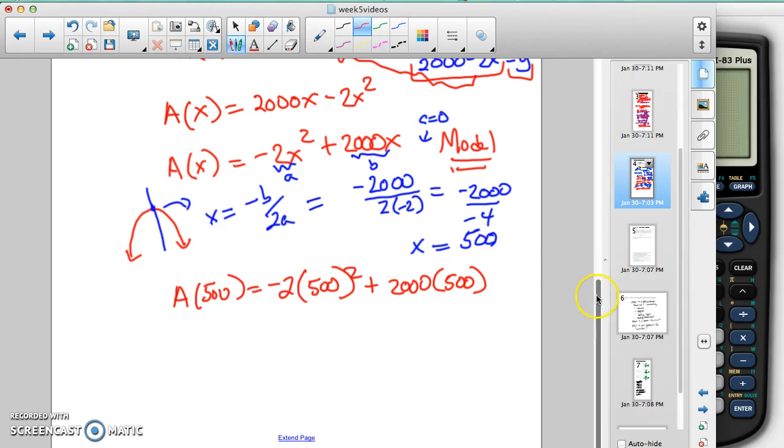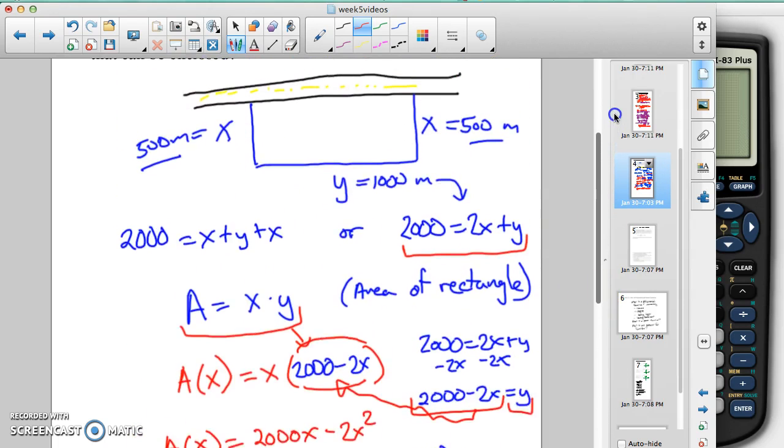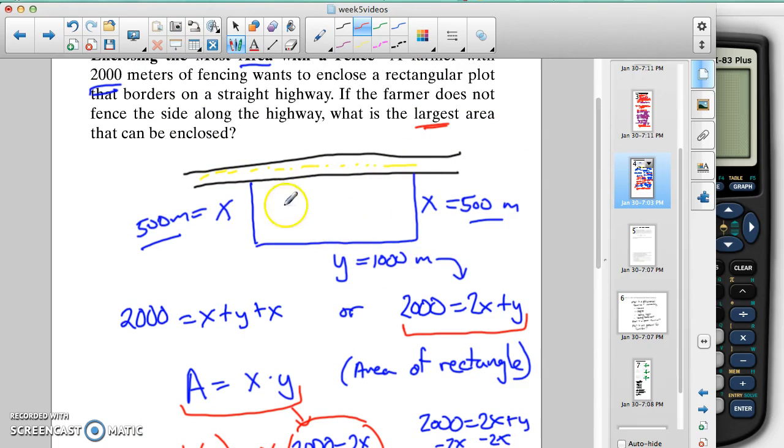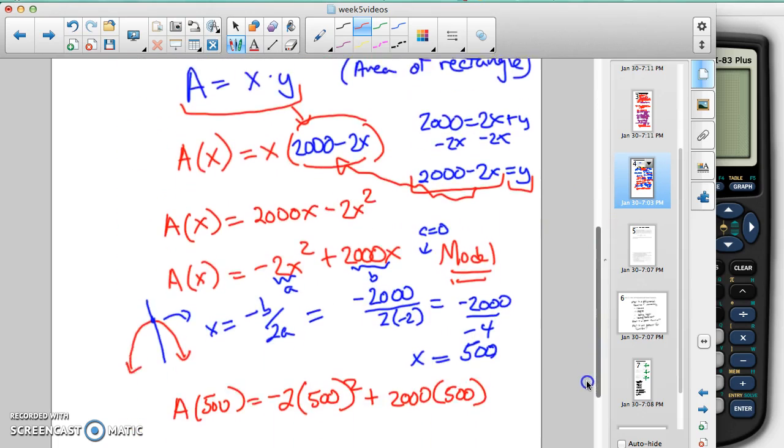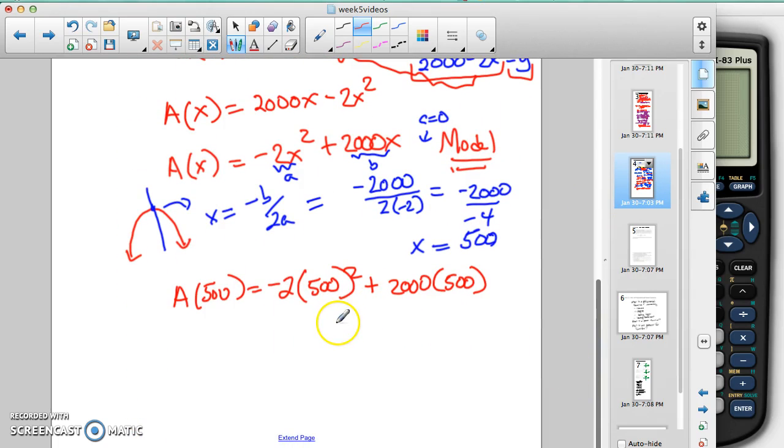That would be a way to plug it into the function to get its area. Or we could go back up here at the picture and just look at what our dimensions are since we figured it out. And so this is going to be 500 times 1,000.